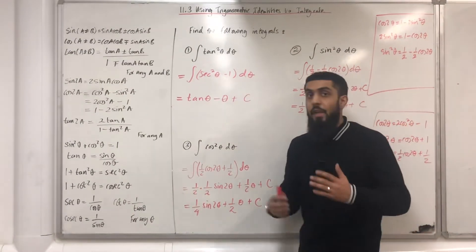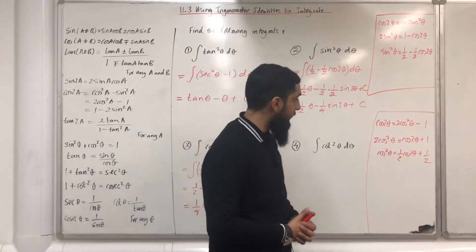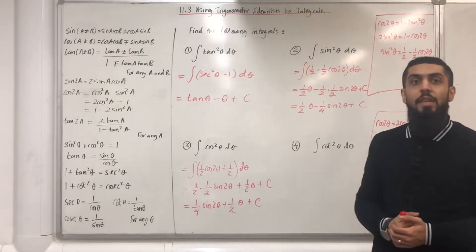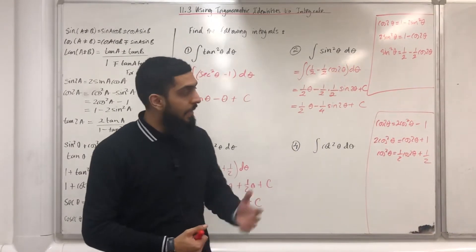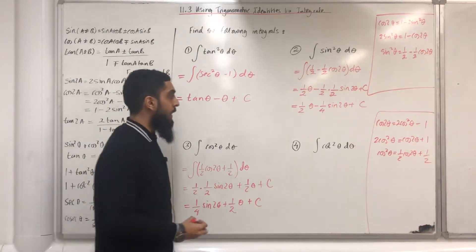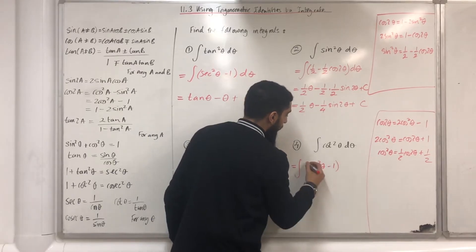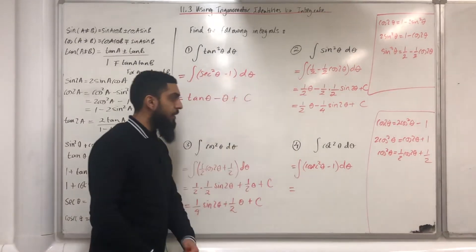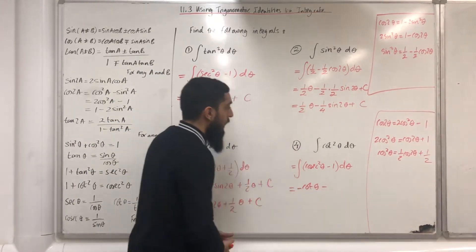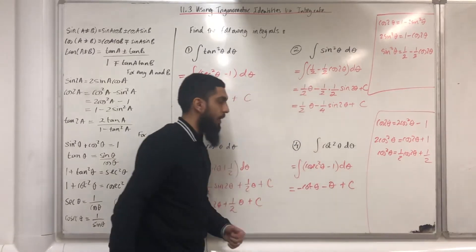Moving on to question number 4: the integral of cot squared theta d theta. This cannot be integrated at the moment. The identity I will be using is 1 plus cot squared theta equals cosec squared theta. Making cot squared theta the subject, I get cosec squared theta minus 1. So this integral is the same as the integral of cosec squared theta minus 1 d theta. The integral of the first term, cosec squared theta, is just minus cot theta; minus the integral of 1 is theta; plus c, the constant of integration.